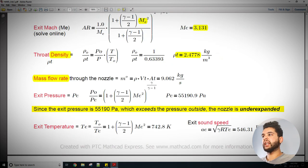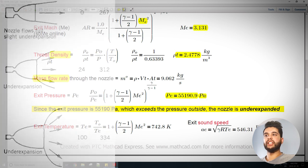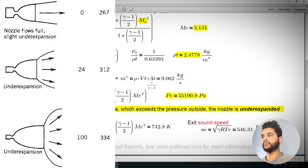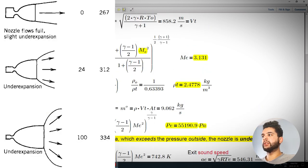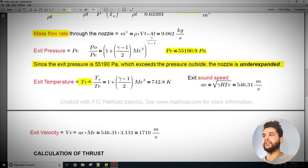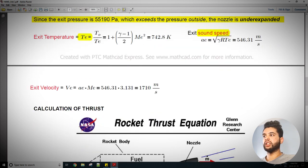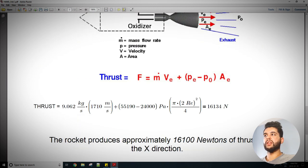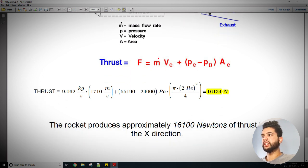From that we can calculate the exit pressure. Since the exit pressure, which is 55.19 kPa, is more than the pressure outside, this means that the nozzle is under-expanded. Similarly, we can get the temperature, the sound speed, and finally we can get the exit velocity. From this we can use the thrust equation to get the force. The force equals simply m dot Ve plus the delta p times the area. By using all the values we solved for, we can get about 16,000 newtons.